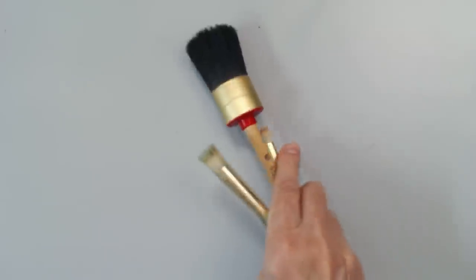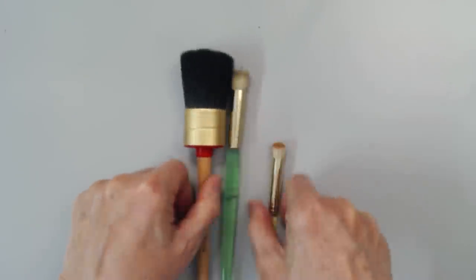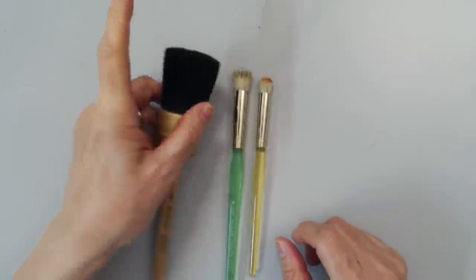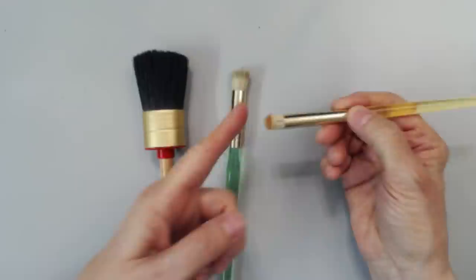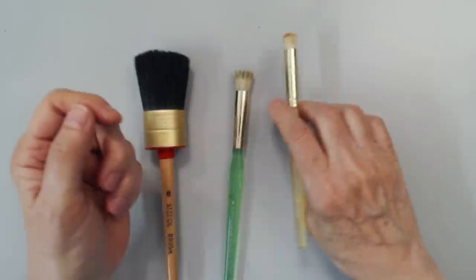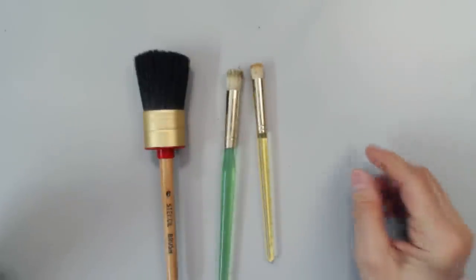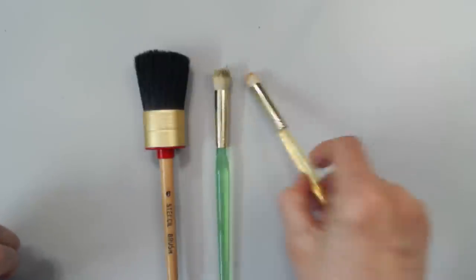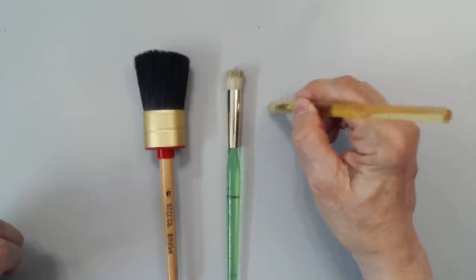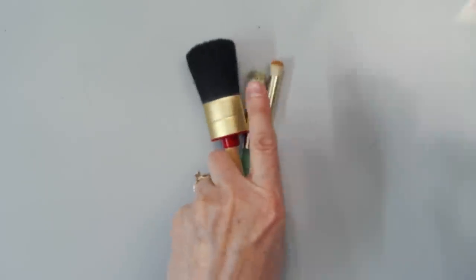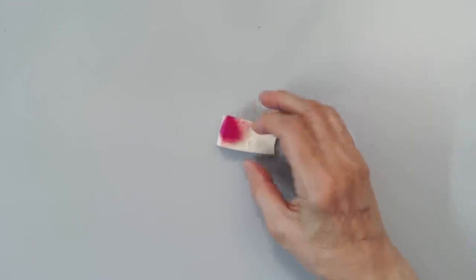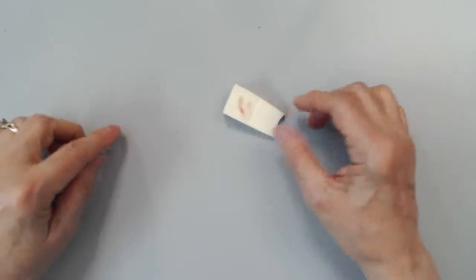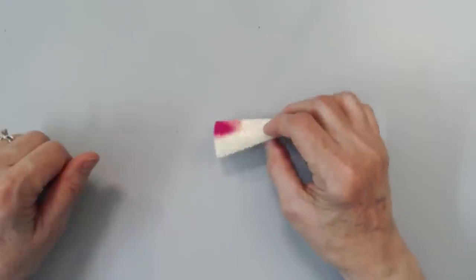Some of the tools used with stencils, of course, stencil brushes. Those work really well. Stencil brushes come in all different sizes. And when you're working with a stencil brush, you work with it pretty dry. So you pick up a little bit of paint, get rid of most of it. And then most of the time you apply the paint with a circular motion. More commonly than stencil brushes, I tend to use a makeup sponge. So these you can get in discount stores in a great big package.